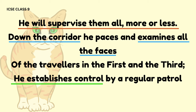Line 20: 'Down the corridor he paces and examines all the faces of the travelers in the first and the third.' Both phrases 'down the corridor he paces' and 'examines all the faces' show visual description and are therefore considered visual imagery. In line 22, 'he establishes control by regular patrol' — the phrase 'he establishes control' is an example of personification, since the cat Skimble Shanks has been given human-like qualities such as supervising and establishing control, just like humans.